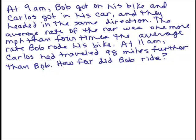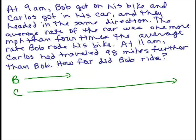So the first thing you want to do is get a picture. Bob gets on his bike and Carlos gets in his car. B could stand for Bob or bike and Carlos could stand for C or car. Bob goes a certain distance and Carlos goes much further being in the car.